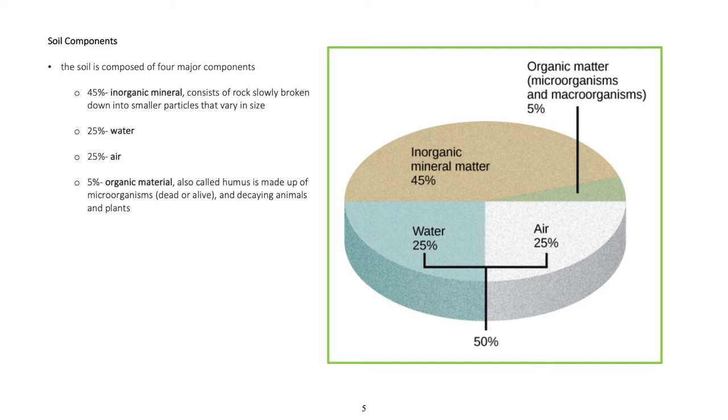25% water, 25% air, 25% organic material also called humus, is made up of microorganisms, dead or alive, and decaying animals and plants.